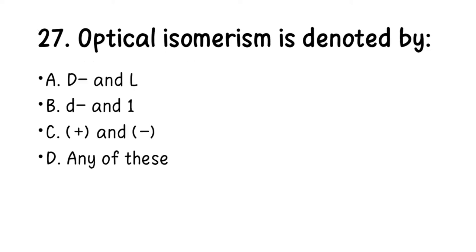Number 27. Optical isomerism is denoted by: A. D and L, B. D and l method, C. Plus or minus sign method, D. Any of these. The right answer here is C, plus or minus.